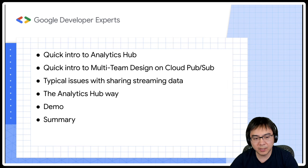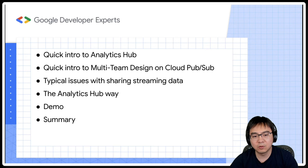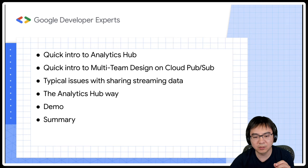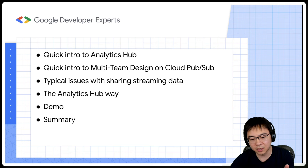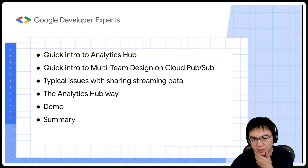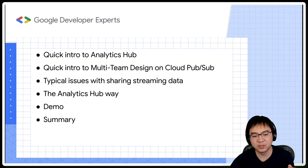First of all, I'll talk about two topics. One is Analytics Hub itself, in relation to one of the videos I created before. Then I'll talk about the multi-team design on Cloud PubSub, which is another video I released a while ago. The reason for covering those two first is because they are most relevant to the issues I want to tackle here — specifically why sharing streaming data has been quite problematic in the past, especially with large teams and large organizations.